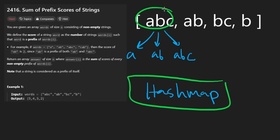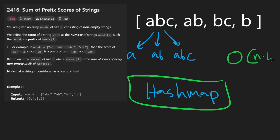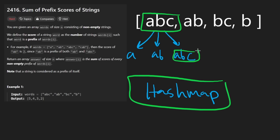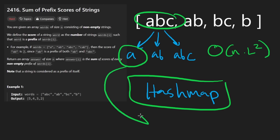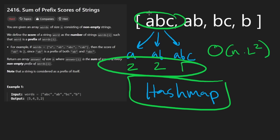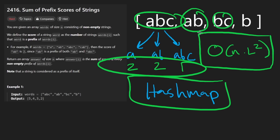With that HashMap mapping, we go through every word, get all the prefixes — already O(N×L) — and for each prefix we just check the HashMap for the count in constant time, then add those up for the score. However, in most programming languages, getting prefixes requires slicing, which itself costs O(L). So the overall complexity is N times L squared. That said, it's still much better than the brute force.